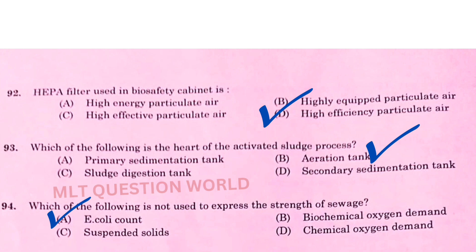Next question: Which of the following is the heart of the activated sludge process? The right answer is option B, aeration tank. Next question: Which of the following is not used to express the strength of sewage? The right answer is option A, E. coli count.